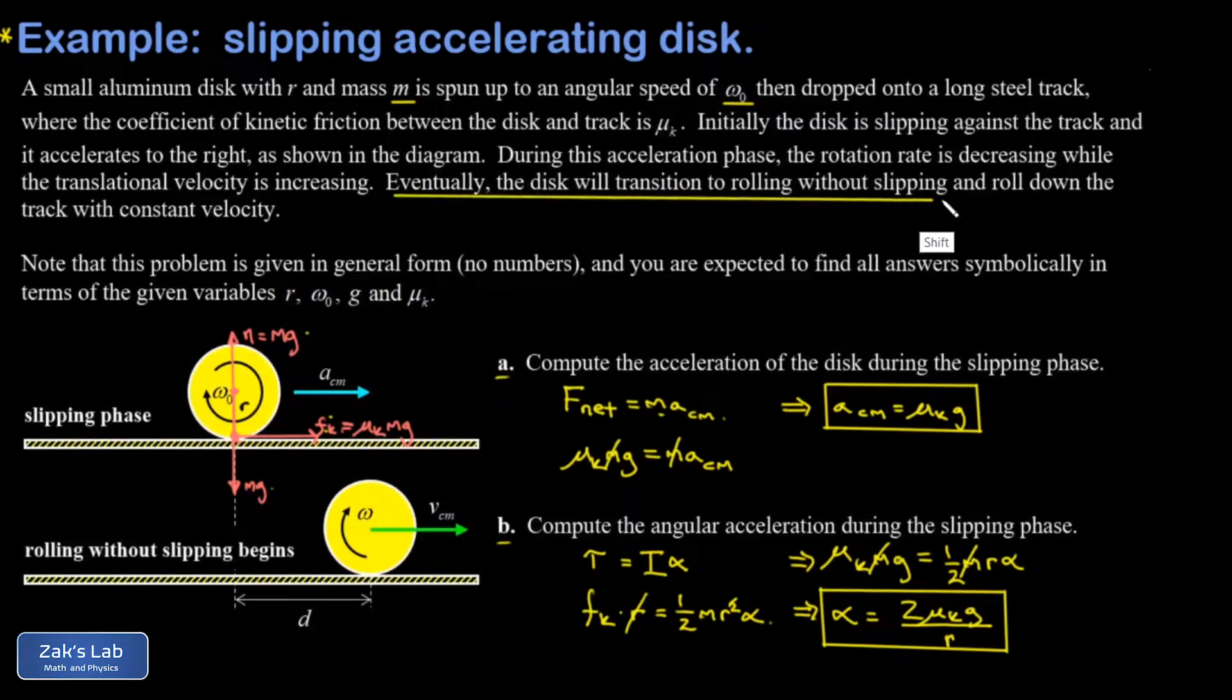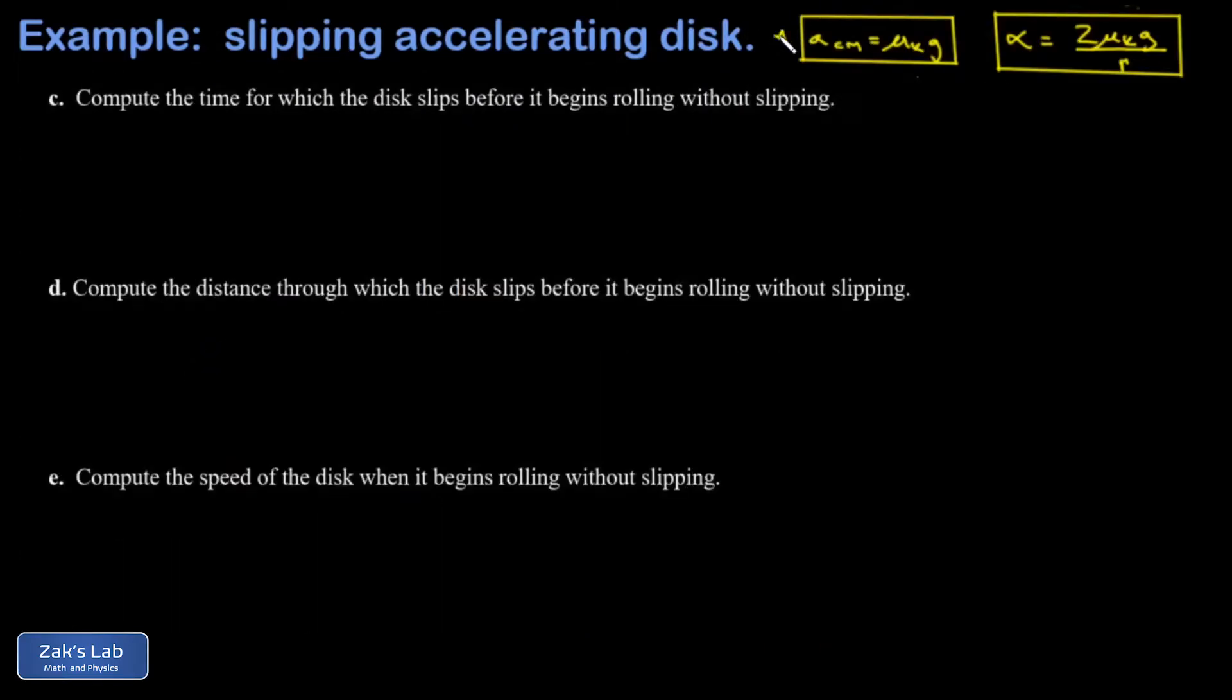Eventually the disk will transition to rolling without slipping, and after that roll with a constant velocity to a good approximation. So how do we figure out how far does it go and how long does it take before it starts rolling without slipping? Well, that's what the rest of the problem is about. So I grabbed our answers to part A and B and put them in the upper right-hand corner for reference. And in part C, we're asked to compute the time for which the disk slips before it begins rolling without slipping.